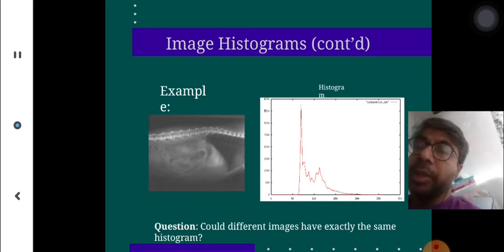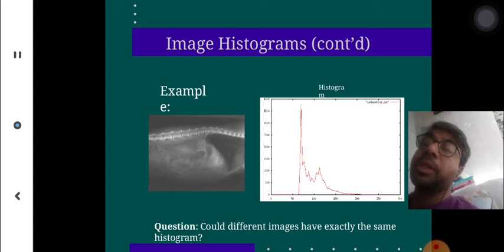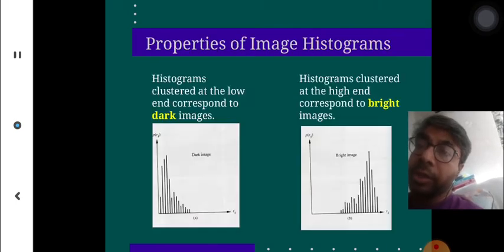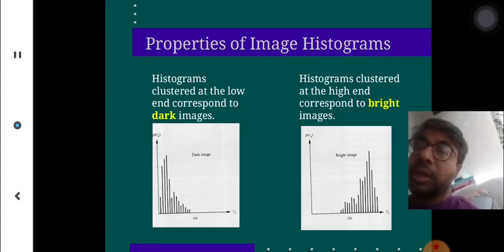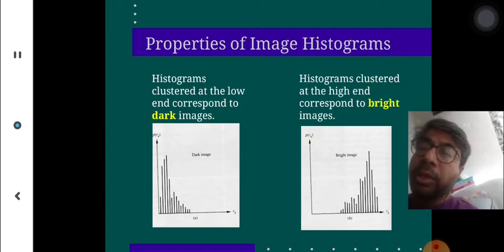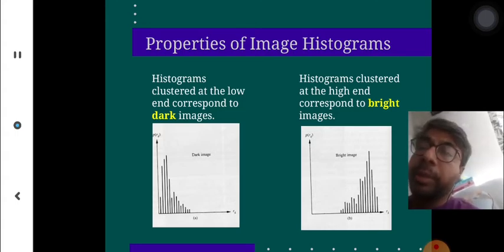Looking at an example image and its histogram — could different images have exactly the same histogram? No, because the histogram representation is very unique, based on the appearance in terms of darkness, light, and variations. Properties of image histogram: a histogram clustered at a very low end corresponds to a dark image, and if the histogram is clustered at the very high end, it is a bright image. Histograms can easily help us identify whether the image is dark or bright.